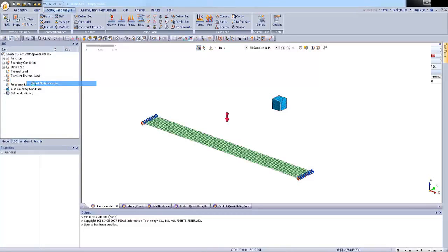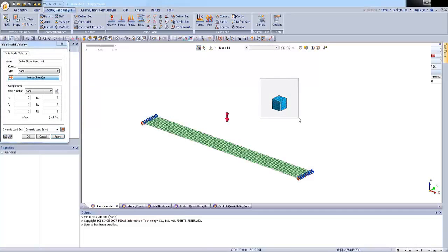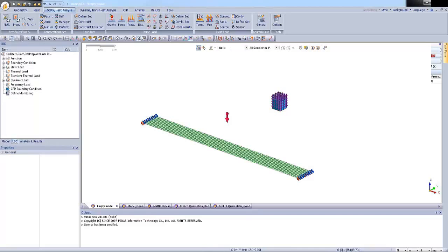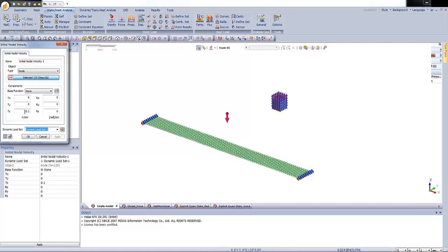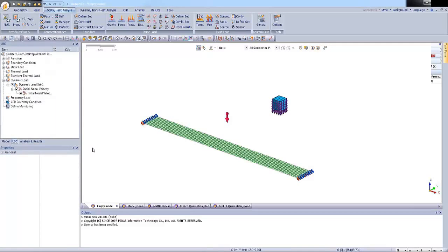And now let's add the initial nodal velocity. So I'm selecting all of nodes from the block. And let's enter the value. 0.1 meter per second. Okay. Oh excuse me. I'm going to edit and we will change the direction.